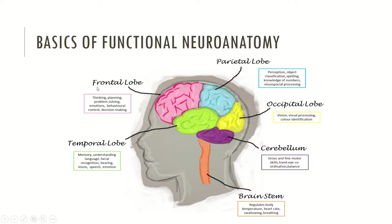Typically associated with the frontal lobe are thinking, planning, problem solving, emotions, behavior control, and decision making — the executive functions. The temporal lobe encompasses memory, understanding language, facial recognition, hearing, vision, speech, and emotion. The parietal lobe encompasses perception, object classification, spelling, knowledge of numbers, and visual-spatial processing. The occipital lobe covers vision, visual processing, and color identification. The cerebellum covers gross and fine motor skills, coordination, and body balance. And the brainstem regulates body temperature, heart rate, swallowing, and breathing.